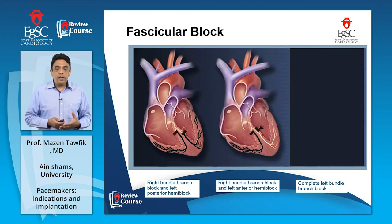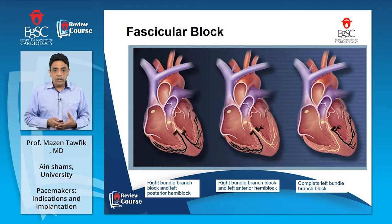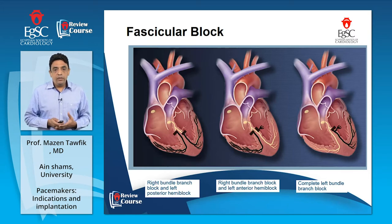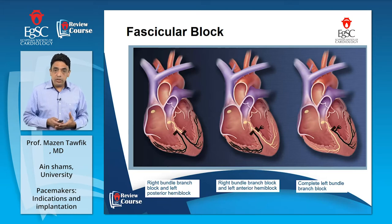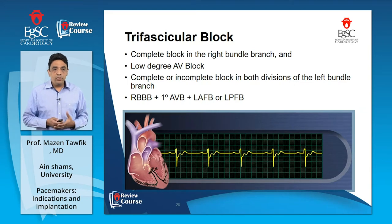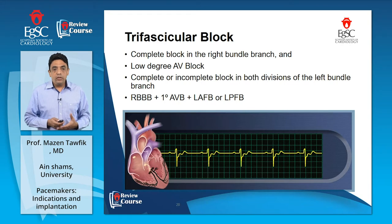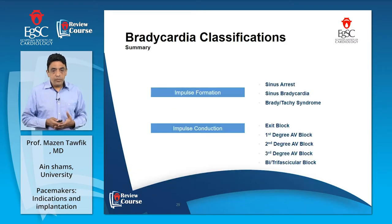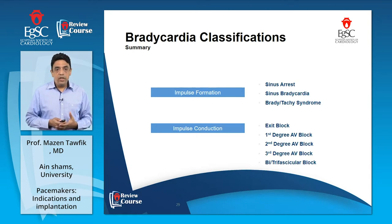The third level is fascicular block, where block occurs at the level of the fascicles: right bundle branch block with left posterior hemi-block, right bundle branch block with left anterior hemi-block, or complete left bundle branch block. If it involves two fascicles, it is called bifascicular block; if it involves more than two fascicles or includes any degree of AV block, it is called trifascicular block. In many cases of trifascicular block there are indications for pacing. To summarize, bradycardia causes pacemaker implantation either due to impulse formation disorder or impulse conduction disorder.